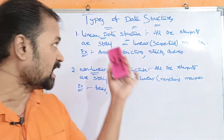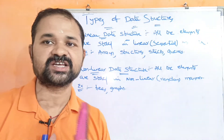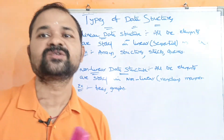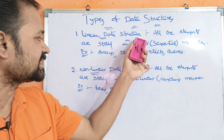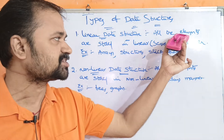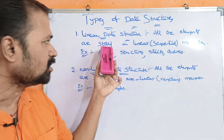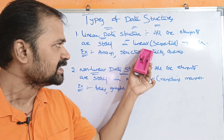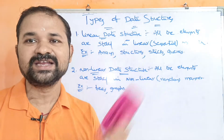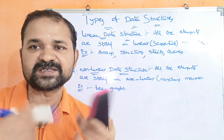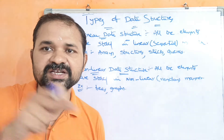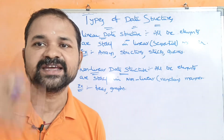Ipdu manam types of data structures gurincha discuss yaddaamu. Data structures measure ga two types suntei. First one is linear data structure, second one is non-linear data structure. Linear data structure lo, all the elements are stored in linear manner. Linear manner can also be called as sequential manner. So the elements are linear ga, sequential ga, one by one arrange thamu.